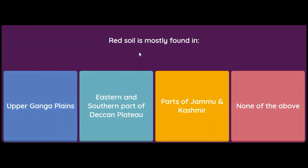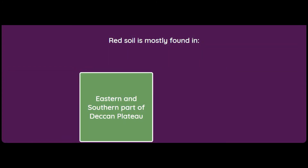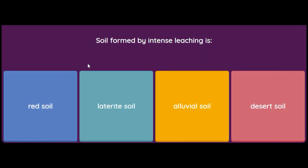Red soil is mostly found in: Upper Ganga Plains, eastern and southern part of Deccan Plateau, parts of Jammu and Kashmir, or none of the above? As we read in the book about red soil, the answer is the eastern and southern part of the Deccan Plateau.